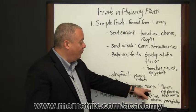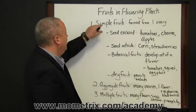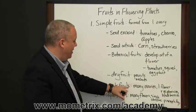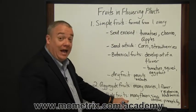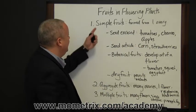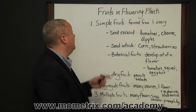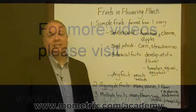Aggregate fruits, many ovaries, one flower. Simple fruits, one ovary. Start here, one ovary, many ovaries, many flowers. We've listed some examples of each one of those. This is a good classification system for keeping in mind the various forms of fruits in flowering plants.